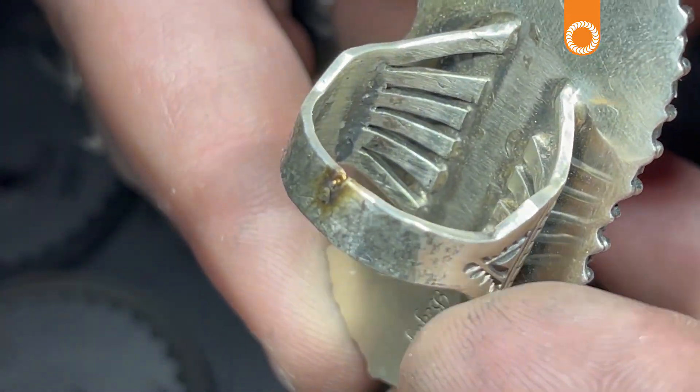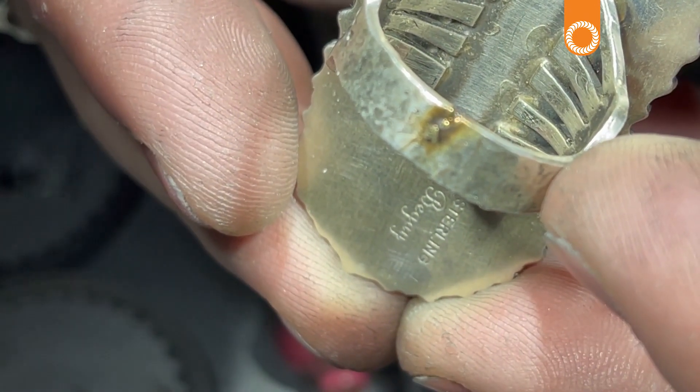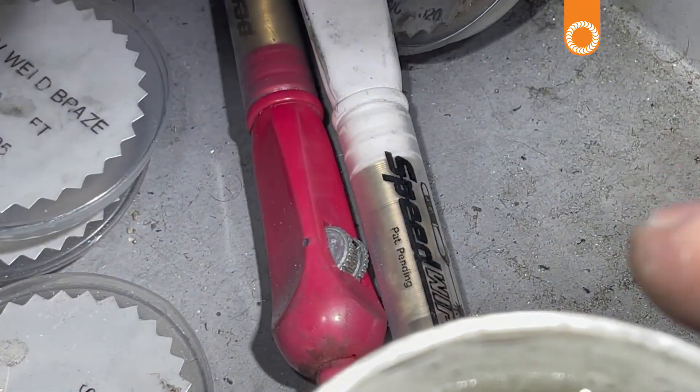Now silver heats up quite a bit as you are welding it. It's very conductive material. We're going to bring in a little cup of water just to help cool down the metal.